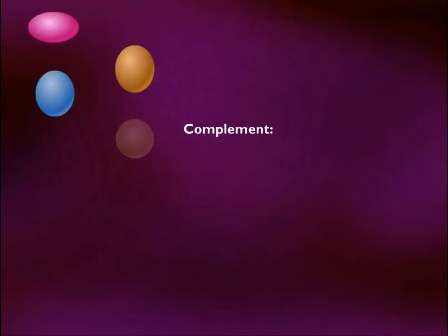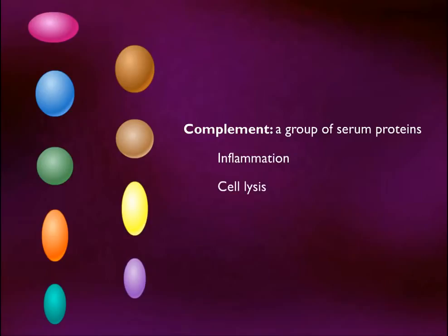Complement consists of a group of serum proteins that activates inflammation, destroys cells, and participates in opsonization. Complement can be activated by a number of different foreign molecules. The complement proteins respond in a sequential manner, producing a cascade of reactions.